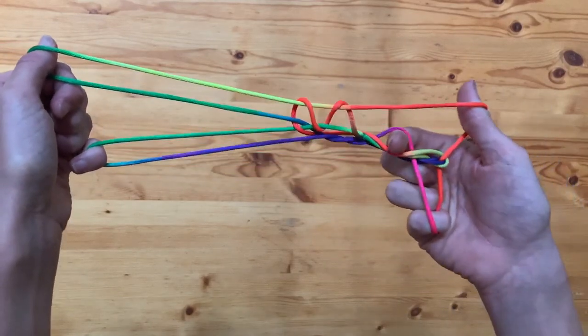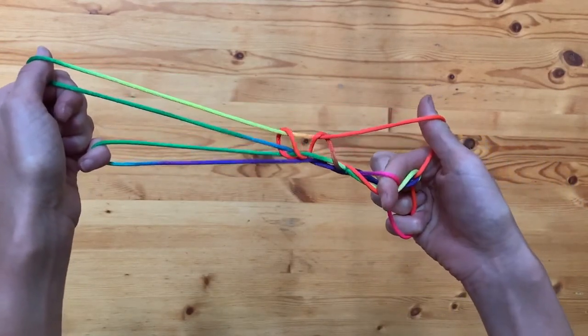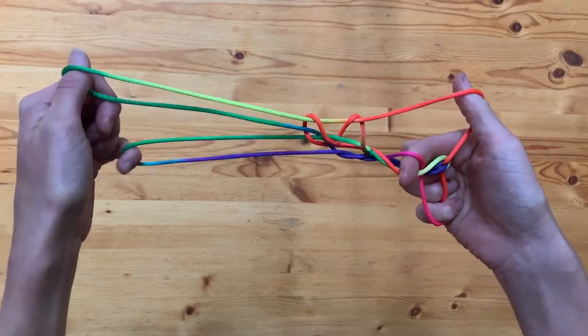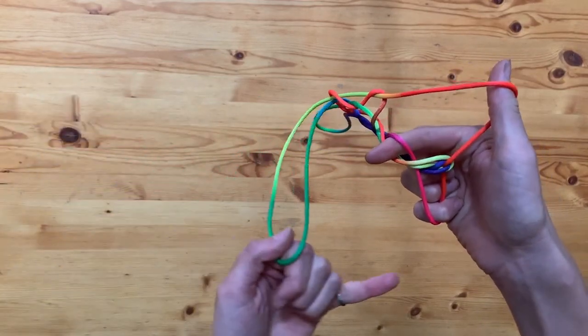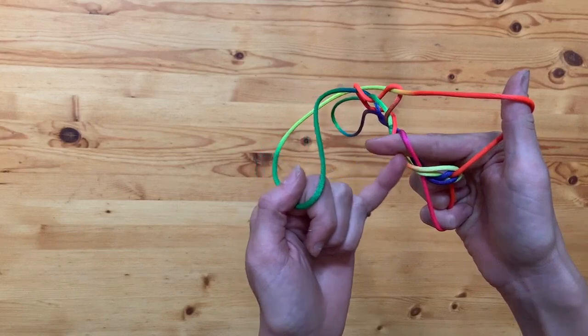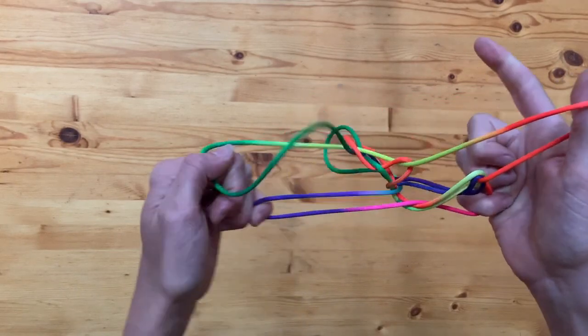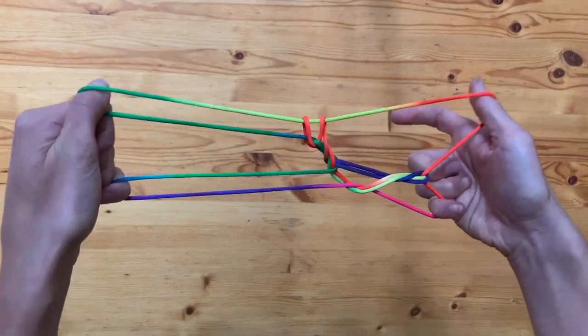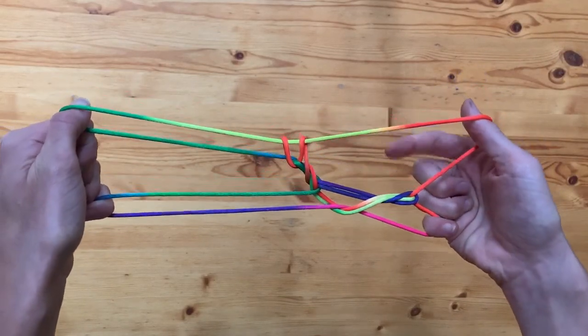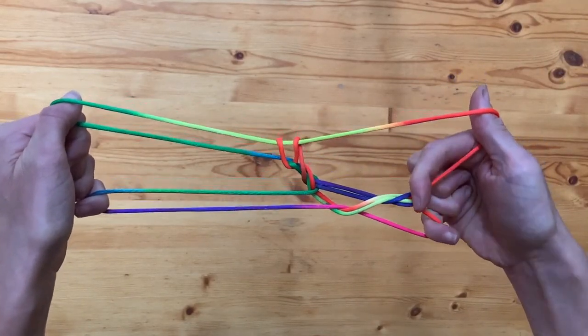So now there's no strings on your index, you just have that loop from the bottom. My left pinky is gonna let go, come around the front and hook that string, take it off of the index. I can now let go and pull tight. I've got the little head of the deer.